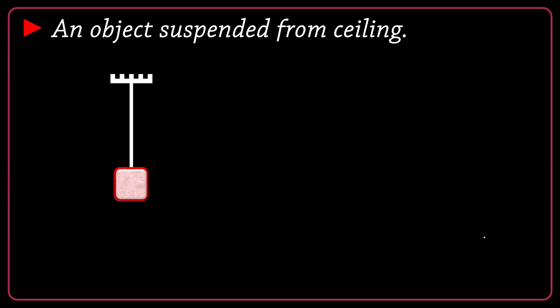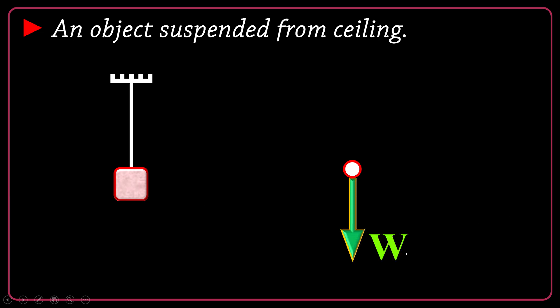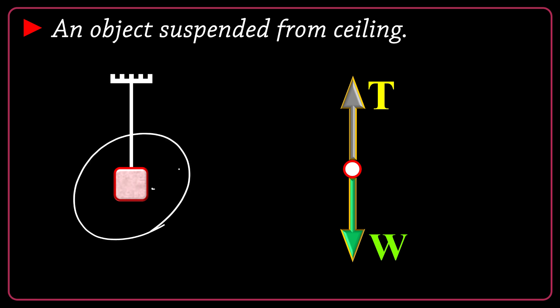Now let's consider a very simple case: an object suspended from a ceiling via a rope. It's at rest, so all forces have a net resultant of zero. We always have a downward force of gravity, mg or W. The other force is the tension T of the rope acting upward on the object to cancel the weight. T must have an equal size to W — not larger, not smaller — because the object is at rest. The object is represented as a point at its center of mass.